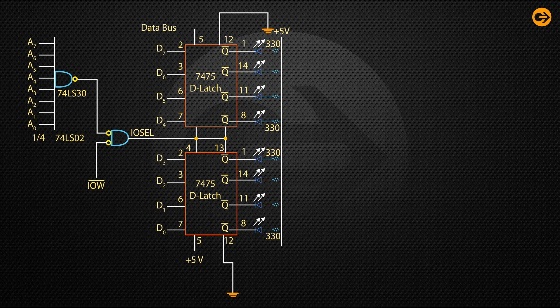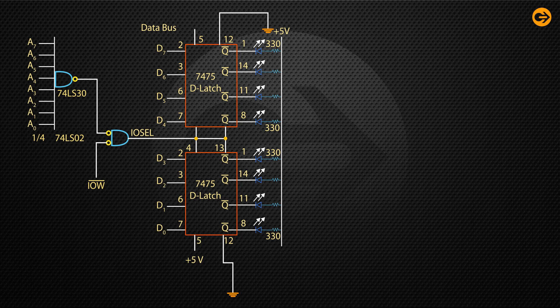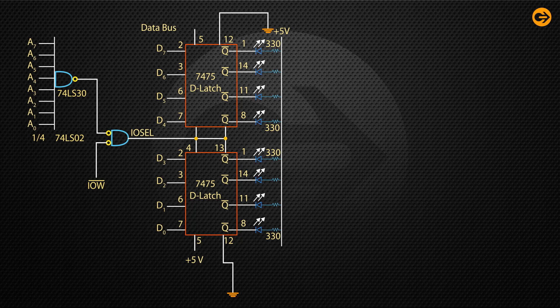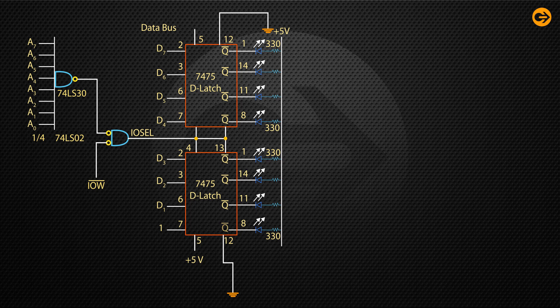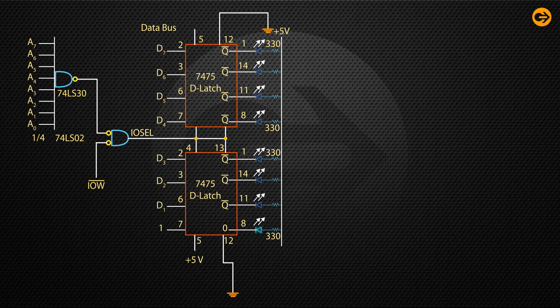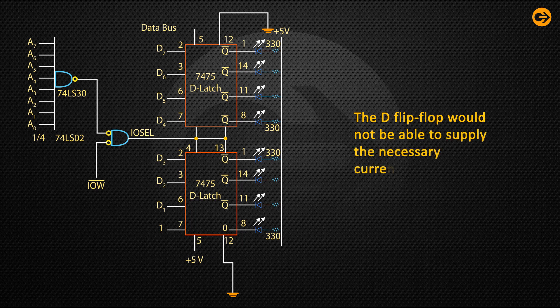In this circuit, the LED cathodes are connected to the Q-bar output of the latch. The anodes are connected to positive 5V through the diodes. When the data line, for example D0 has 1, the output Q-bar is 0 and the corresponding LED is turned on. The D flip-flop would not be able to supply the necessary current to the LED.